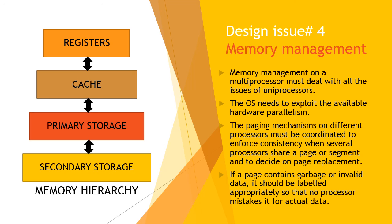The paging mechanisms on different processors must be coordinated to enforce consistency when several processors share a page or segment, and to decide on page replacement. When a page or segment is shared, care must be taken that it is not replaced out of RAM as long as any processor has need of it. If a page contains garbage or invalid data, it should be labeled appropriately so no processor mistakes it for actual data.